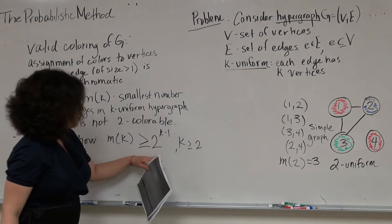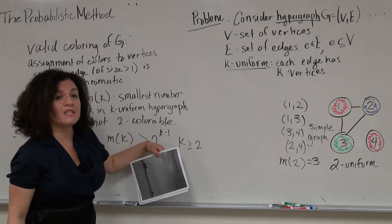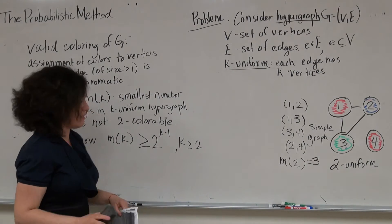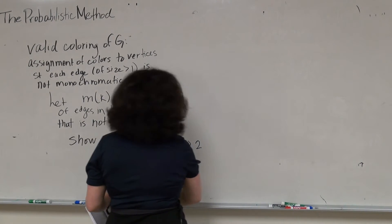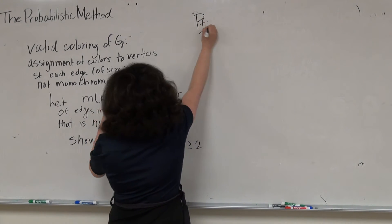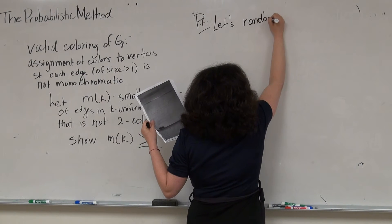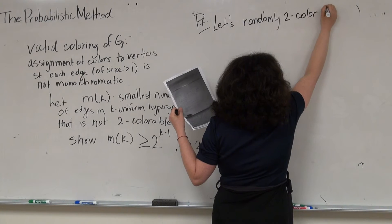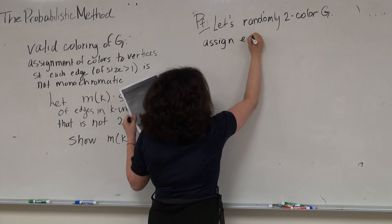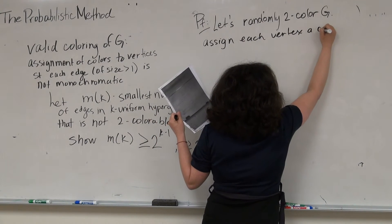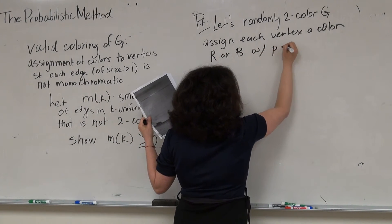Let's get to work on showing this result. We're going to consider the complement: we consider when the number of edges is at most 2^(k−1) and show that a valid 2-coloring exists. To start, what we're going to do is randomly 2-color the graph — we assign each vertex the color red or blue with probability 1/2, independently.